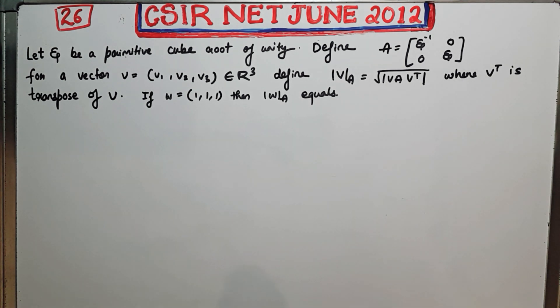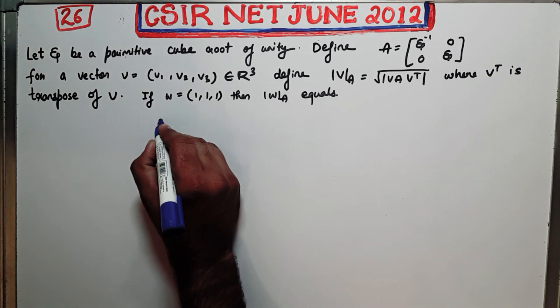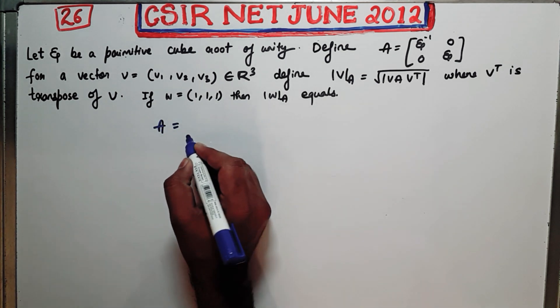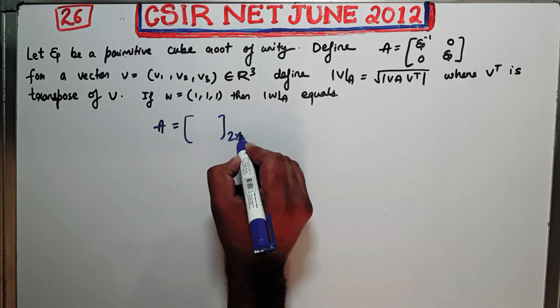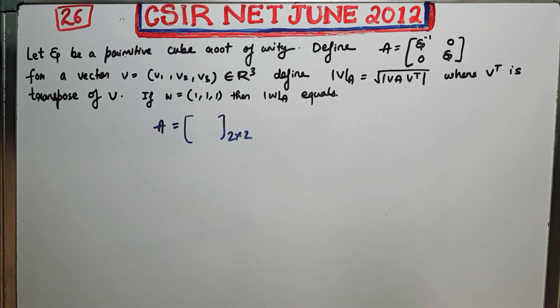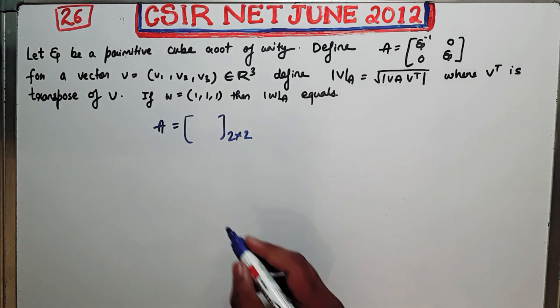Your A matrix is actually a 2 cross 2 matrix, right? Your A matrix is a 2 cross 2 matrix and they are giving you a vector in R cube, that means this V transpose is actually a vector of 3 cross 1.